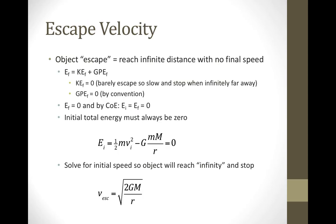Now we can calculate what is known as the escape velocity. For an object to escape the Earth, it must reach an infinite distance away. We'll calculate how much it takes to just barely escape, meaning when it's infinitely far away, it comes to rest. Using energy conservation: the final energy when infinitely far away is the sum of final kinetic and final potential. We assume final kinetic energy is zero — it just barely escapes — and potential energy at that point is defined to be zero, so the final energy must be zero. By conservation of energy, the initial energy must also be zero.